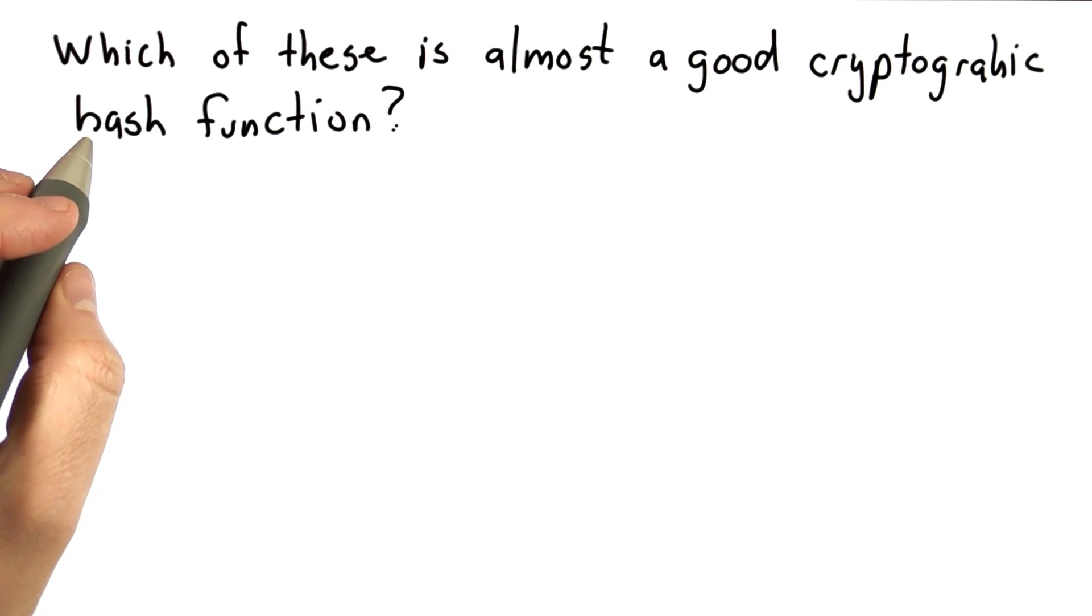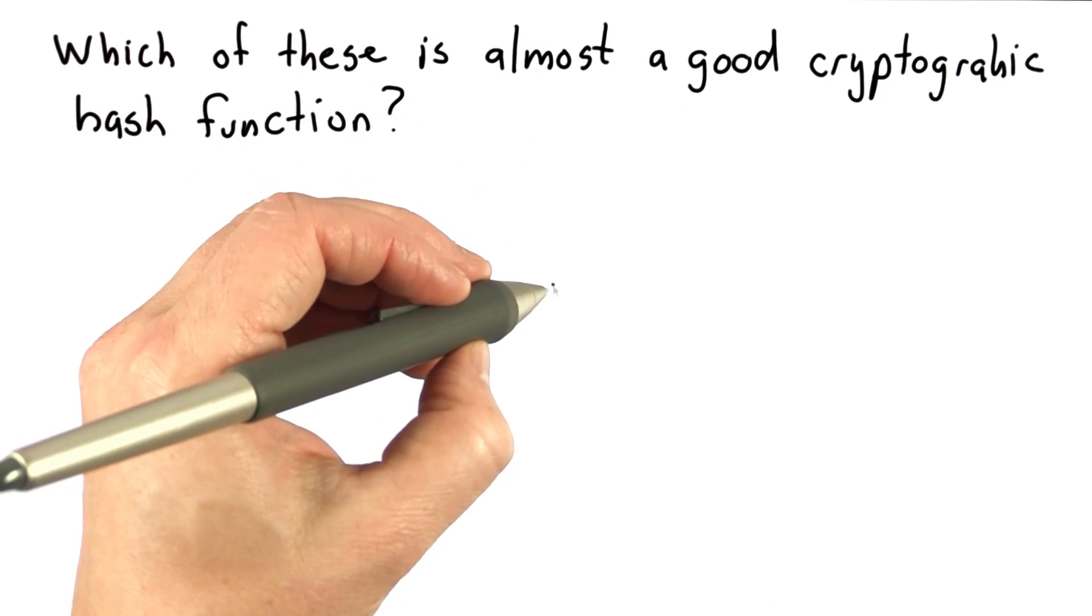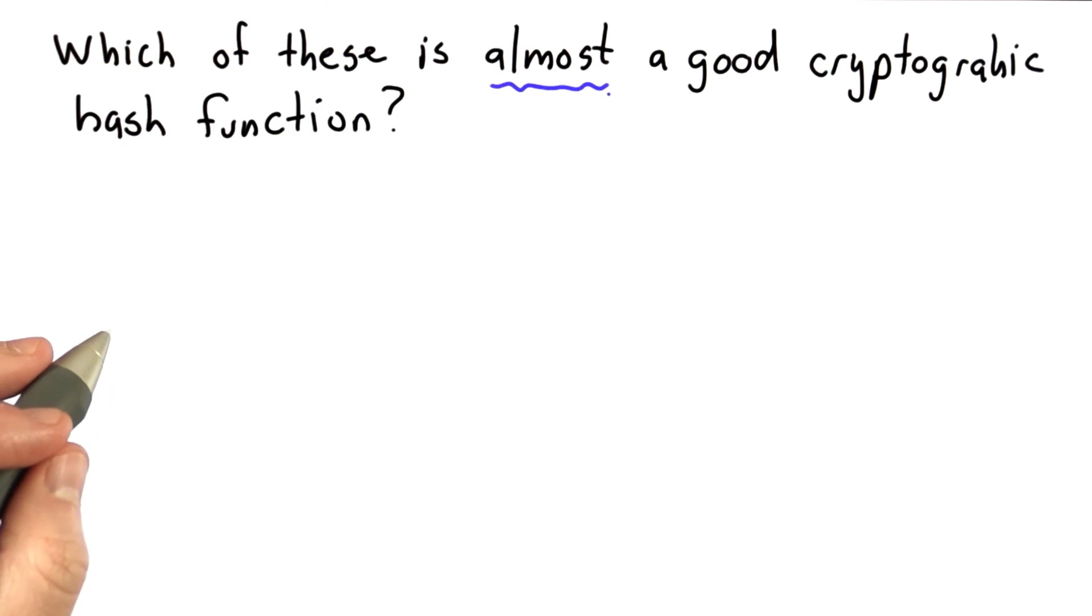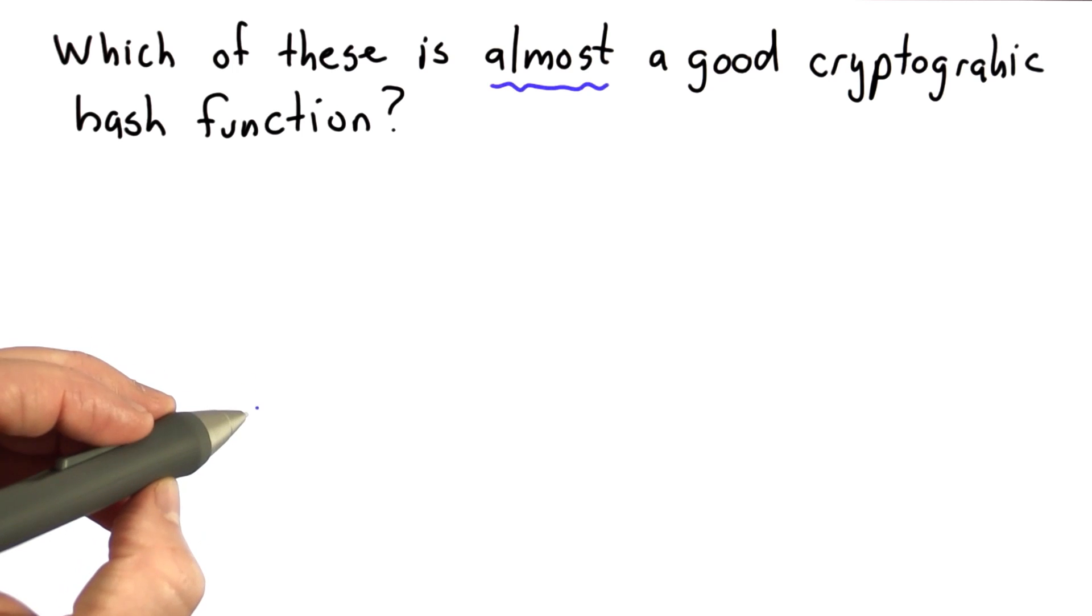So have we seen anything that can do this? And the question is, which of these is almost a good cryptographic hash function? And I'm using almost here in somewhat of a fuzzy way, but I want you to select the one that seems closest to being a good cryptographic hash function. None of them is a perfect cryptographic hash function, and we'll discuss that more after the quiz.